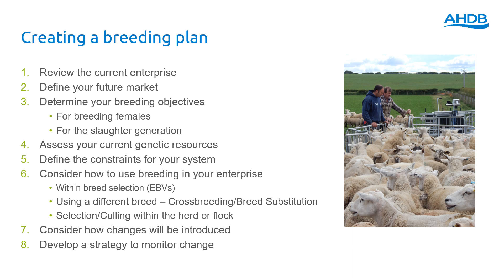Think about the constraints on your system in terms of land, forage, health, and labour availability. Consider how best to change the genetics in your enterprise — whether that's through within-breed selection, using a different breed through crossbreeding, or selecting within the herd or flock. Think about how these changes are going to be introduced, and then develop a strategy to monitor change over time to see how successful your breeding plan has been.